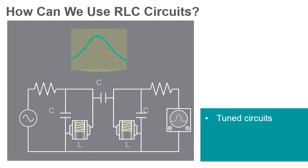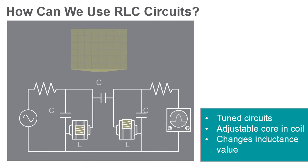Other types of variable tuned circuits that are commonly preset from the factory often use a threaded adjustable core that can be screwed in and out of a coil. Adjusting this core changes the inductance value of the coil and the L value of the RLC circuit.